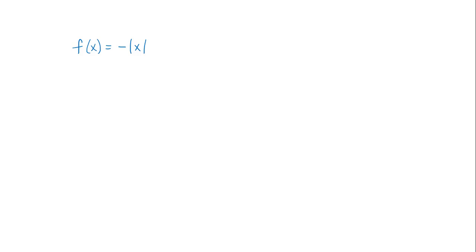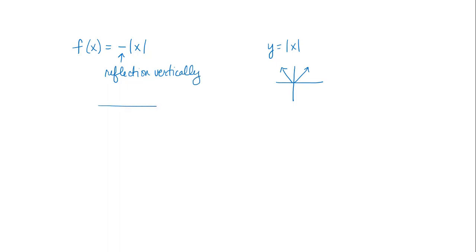Just quickly — if f(x) = -|x|, just by looking at that function you should know how the graph is impacted. The graph of y = |x| is our v-shaped graph. The negative on the outside means a vertical reflection — we reflect across the x-axis, flipping the image over vertically, so the v-shape would be going in a downward direction. Let me know if you have any questions. Thank you so much.